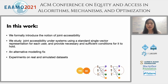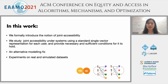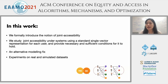As an overview of this work: we formally introduce the notion of joint accessibility and study it in recommender systems using a standard single-vector representation. Based on this feature representation, we provide necessary and sufficient conditions for joint accessibility to hold. Surprisingly, we found that many current feature representations don't really guarantee joint accessibility, and we provide an alternative modeling fix. Lastly, we experiment on real and simulated datasets and demonstrate that the stereotyping problem can really happen with real data, and why we need to consider fixes to improve joint accessibility.